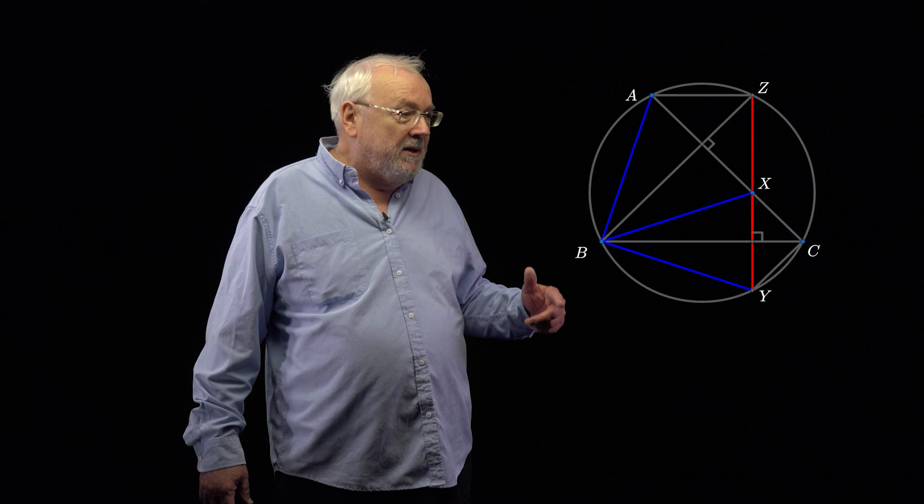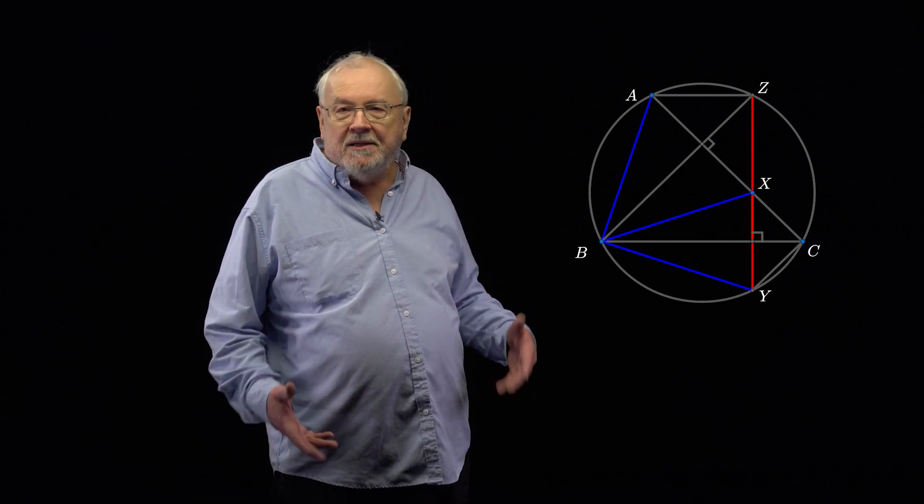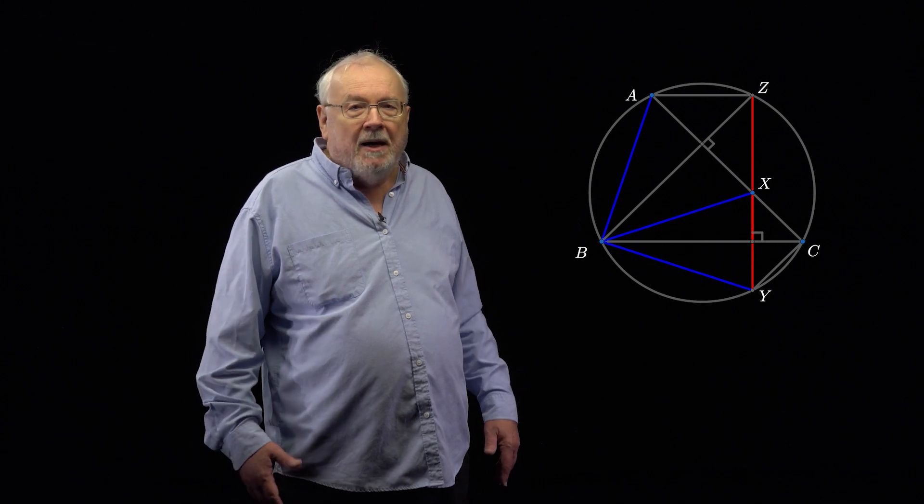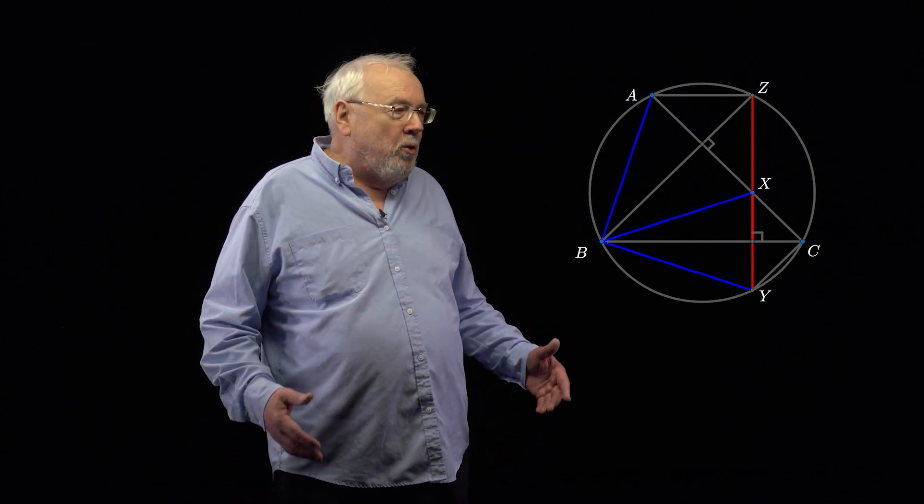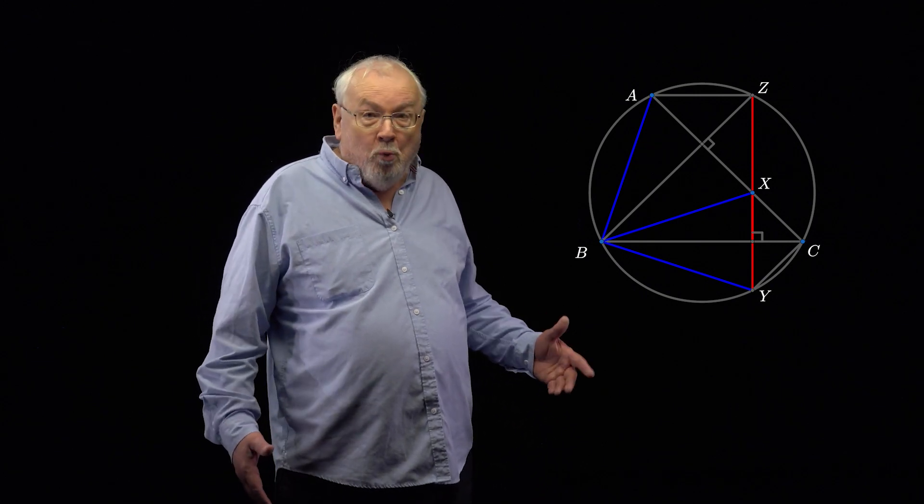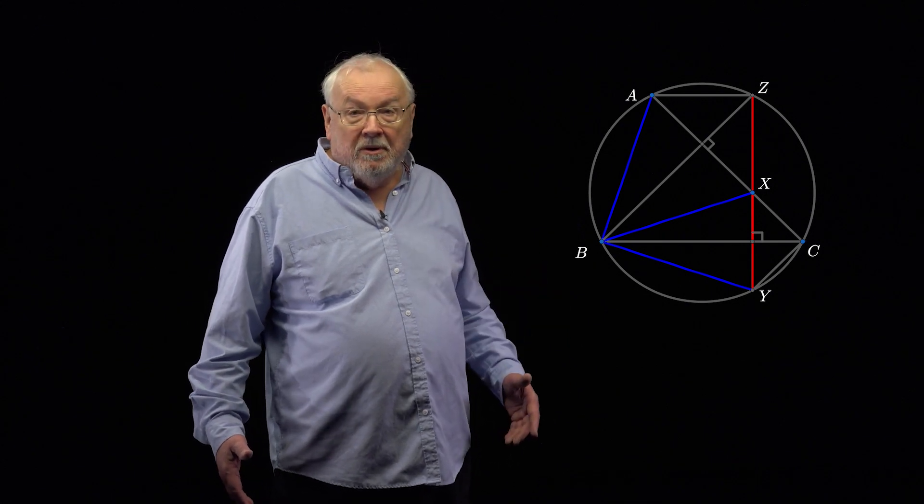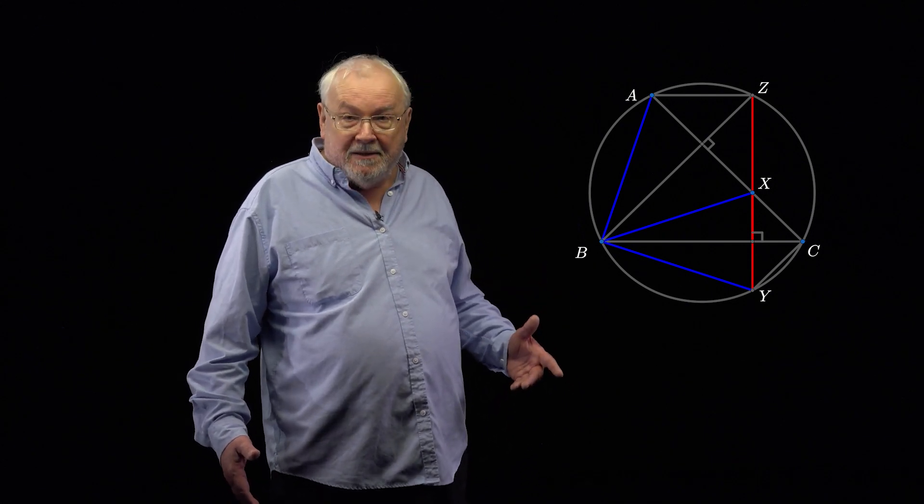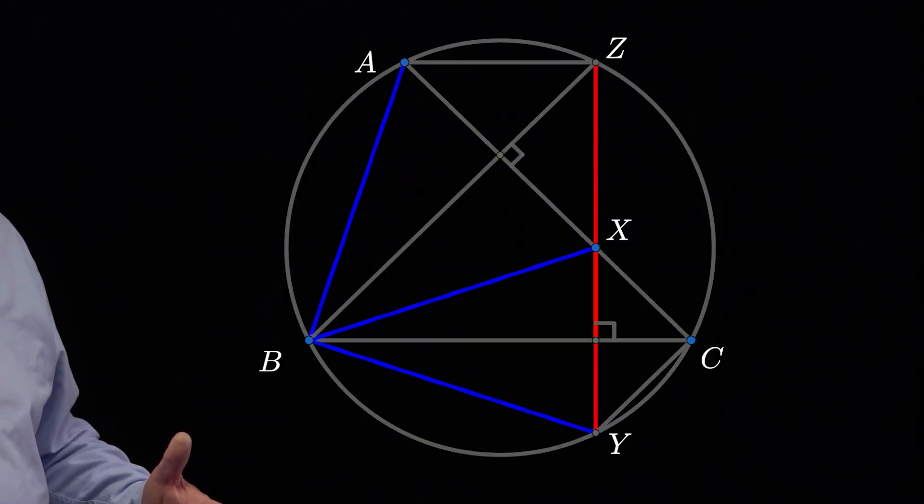We could have done it another way. We could have used the circle to define the points Y' and Z' and then show that various lines had properties. Three points lie on a line or perhaps two lines were at right angles, that sort of thing. That would all work, but it would be more work. So I'm just recommending this method as an approach when you've got a diagram with a circle in it.